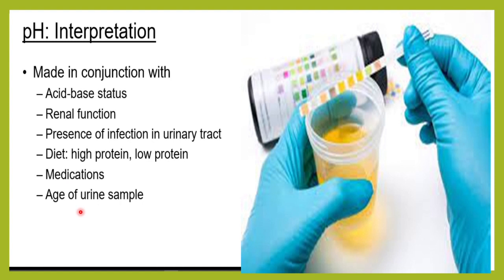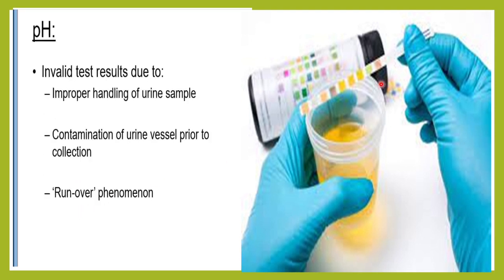Also consider when the urine was analyzed. Sometimes you will get an invalid result — a very high pH or a very low pH — and that could be due to improper handling: the urine was not stored correctly, or the container had contamination. There is also something called a runover phenomenon, where excess urine flows from one pad to another on the strip, causing carryover that alters the color changes.